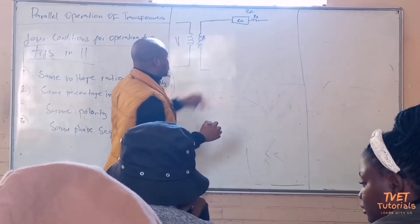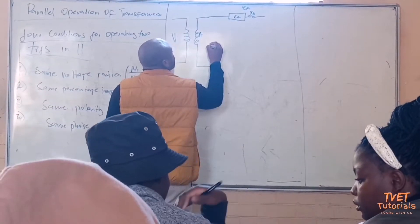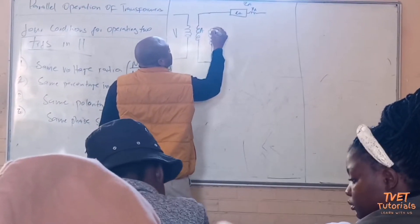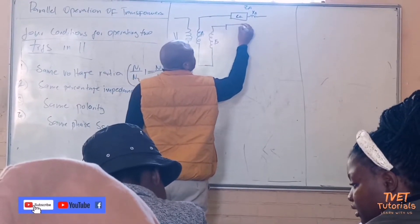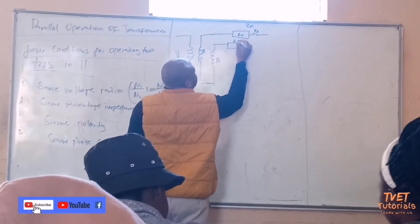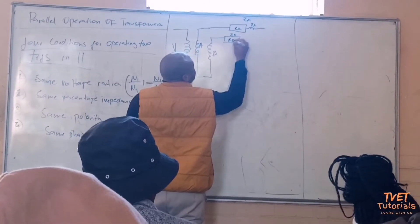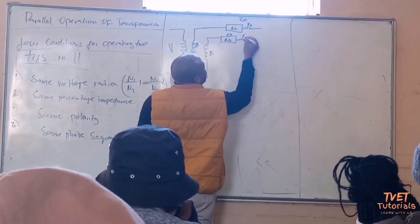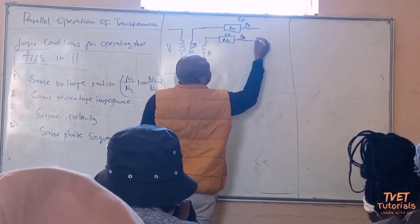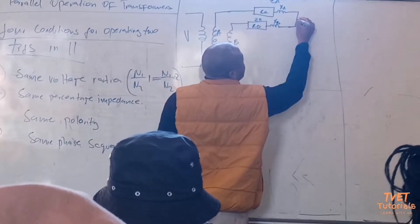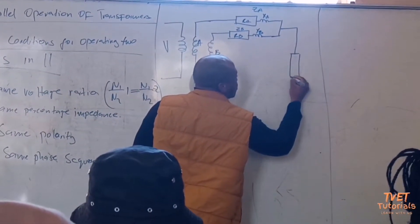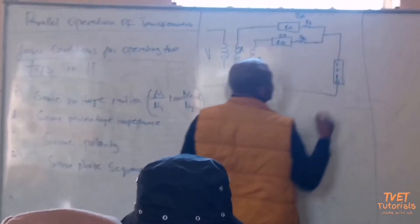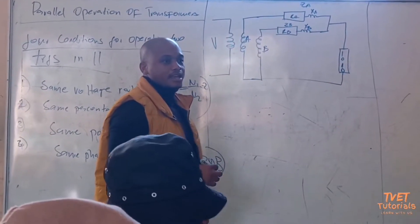Then I connect in parallel a second transformer, and I'm going to call it transformer B, with its own impedance ZB which has RB connected in series with XB. Both these transformers are supplying a common load.